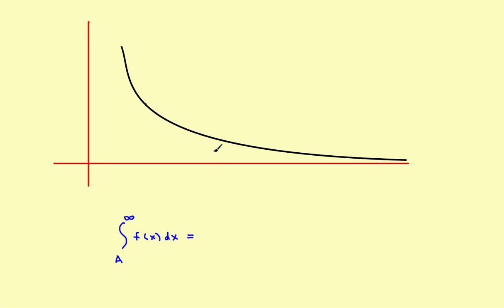In this video we're going to look at something called improper integrals. The integrals you're used to working with go from a to b — for example, from 1 to 5 of some function — and you can find the area under the function using a definite integral. But what happens if that upper limit was infinity? Rather than going from a to some fixed number, suppose it went from a off to positive infinity.